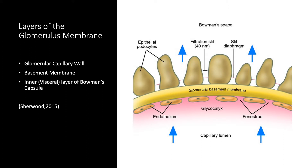The glomerular capillary wall consists of a single layer of flattened endothelial cells. It is perforated by many large pores that make it more than 100 times more permeable to water and solutes than capillaries elsewhere in the body. The glomerular capillary not only has traditional pores found between the endothelial cells, but the endothelial cells themselves are also perforated by large holes or fenestrations.